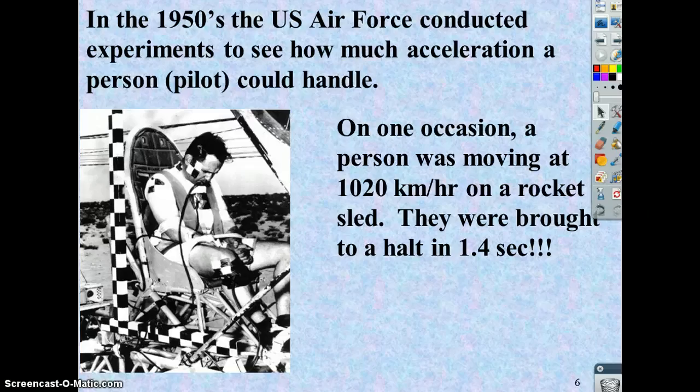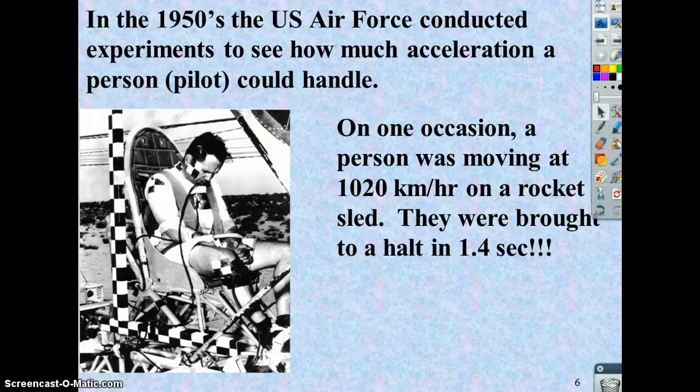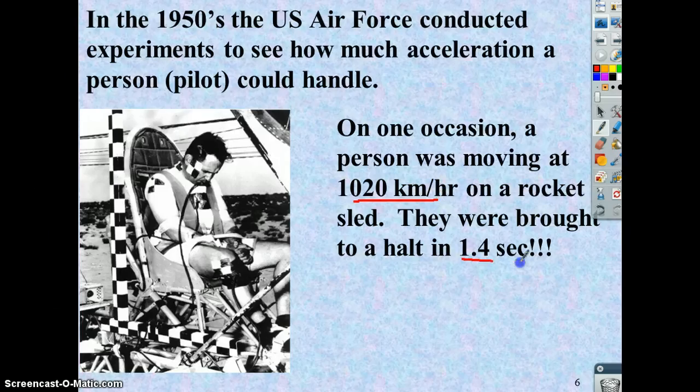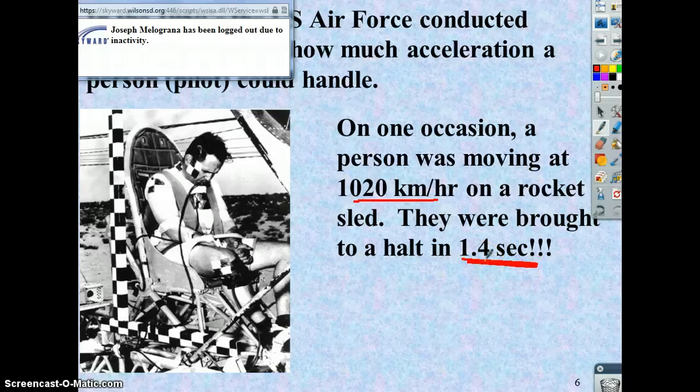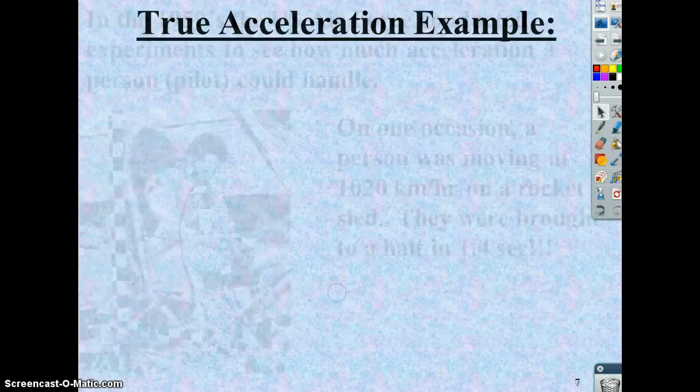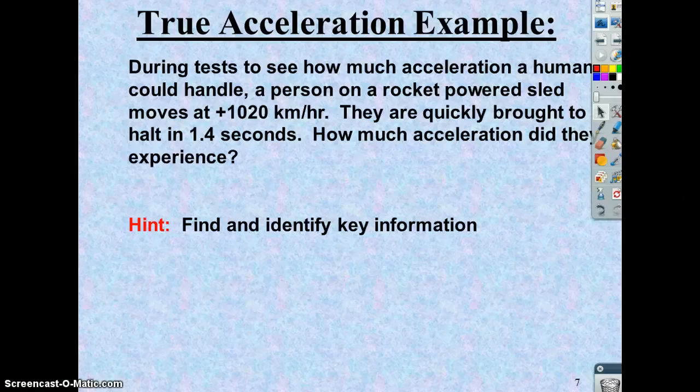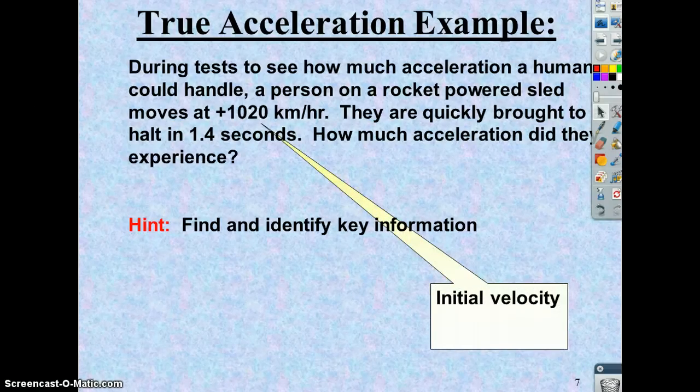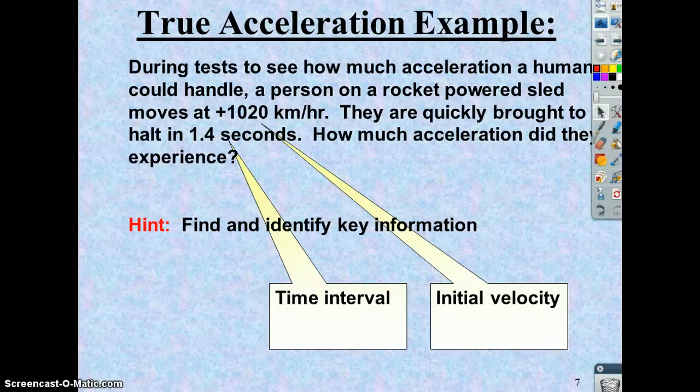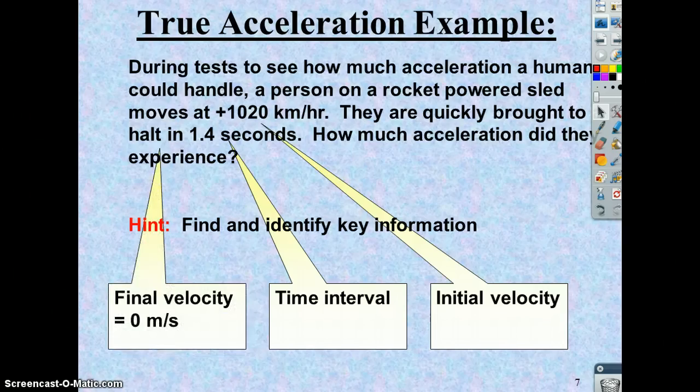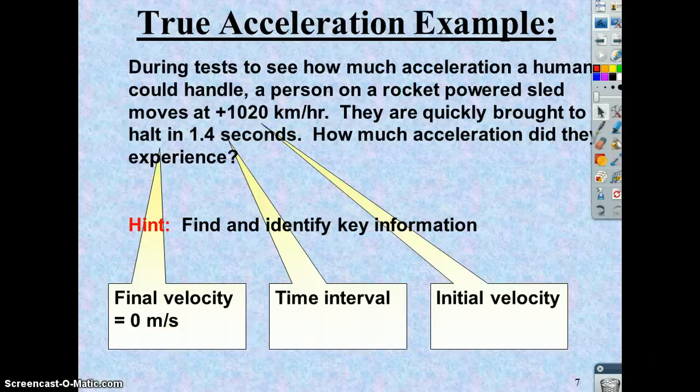Here's another example. U.S. Air Force conducted research to see how much acceleration a pilot could handle. They put a guy on a sled at this ridiculous speed of 1,020 kilometers per hour and brought him to rest in only 1.4 seconds. So think of the rate of change in velocity in that experiment. If we actually run through that to figure out what the acceleration is, here's the problem again. We need to find and identify our key information. 1,020 kilometers per hour is our initial velocity. 1.4 seconds is the time interval over which the speed changes. Although the number 0 is not actually stated in the problem, the person comes to a halt, which means they stop. So that would mean the final velocity is nothing or 0.